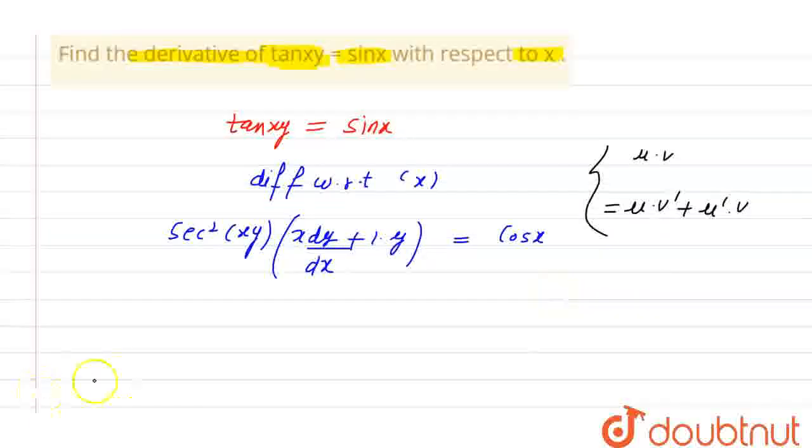Now, we can multiply secant square xy with first term as well as with second term.